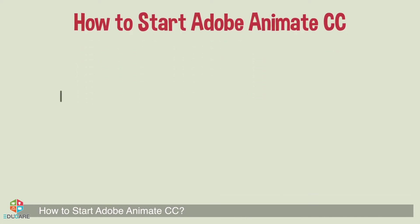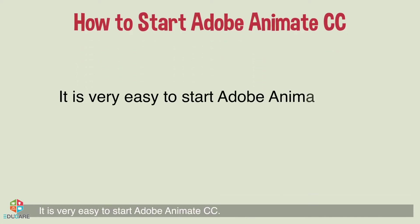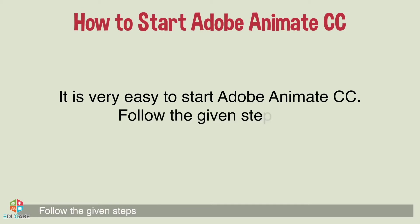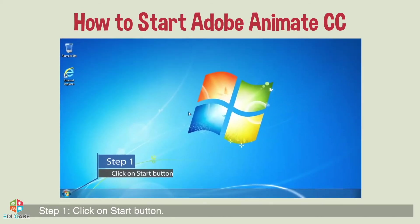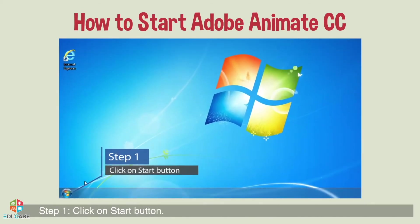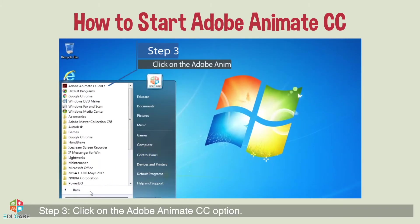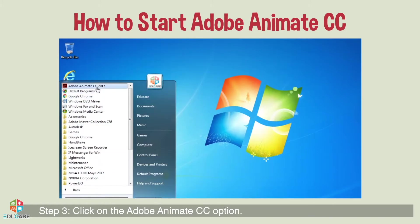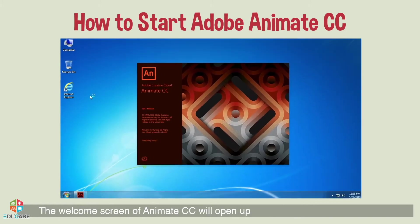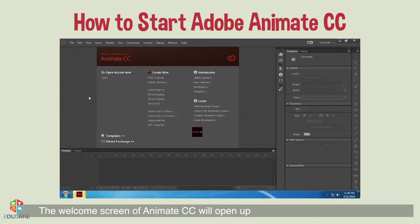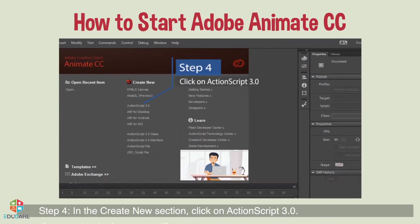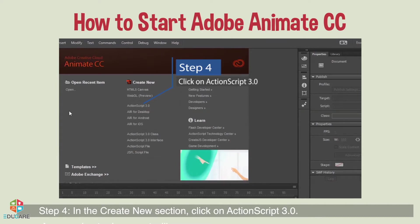How to start Adobe Animate CC: it is very easy. Follow the given steps. Step 1: click on the Start button. Step 2: click on All Programs. Step 3: click on the Adobe Animate CC option. The welcome screen of Animate CC will open up. Step 4: in the Create New section, click on ActionScript 3.0. A new Animate document will open up.